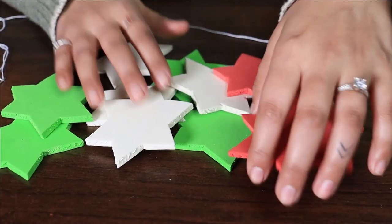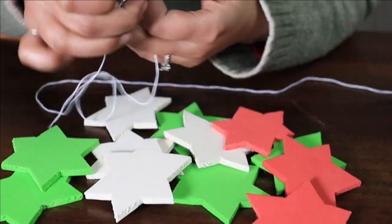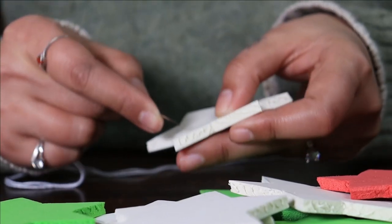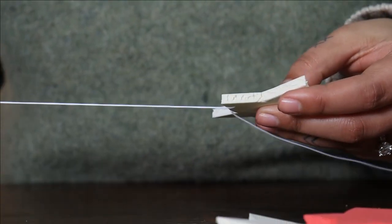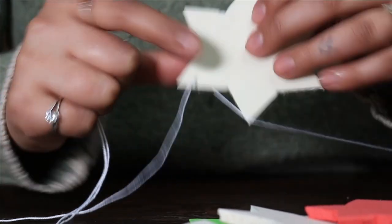Once you have all the stars cut out, it's time to hang these on the threads. Start by putting the needle through the front, pulling it all the way to the back.